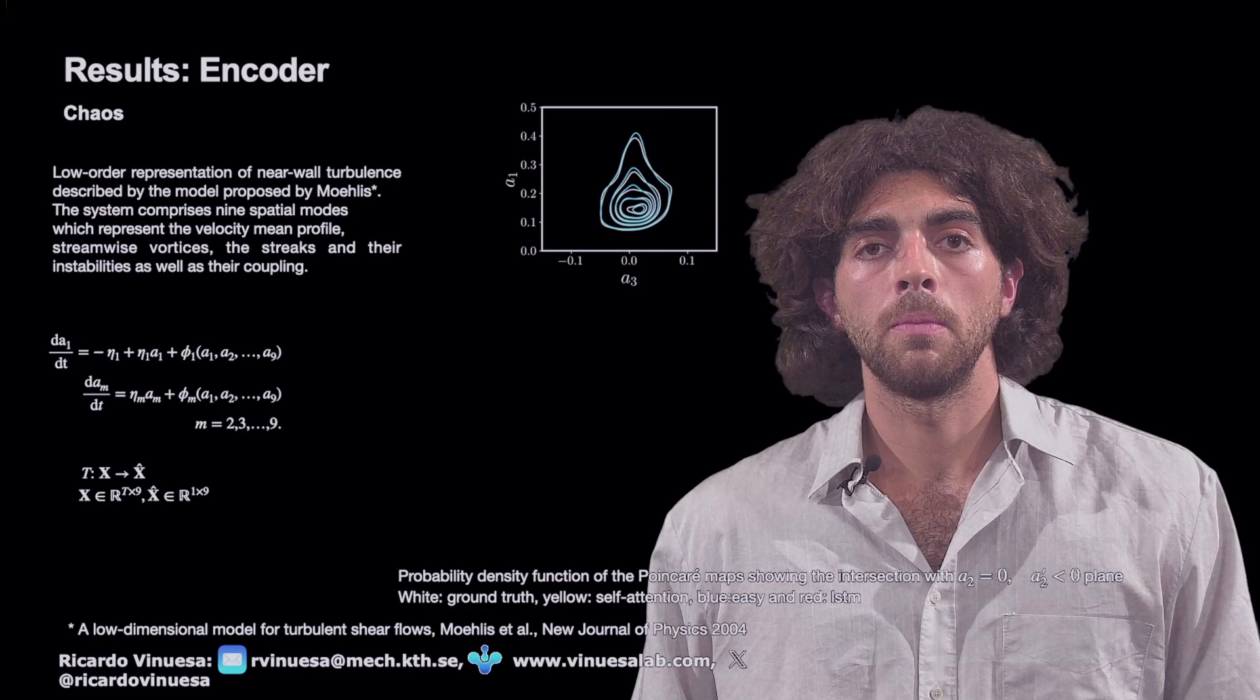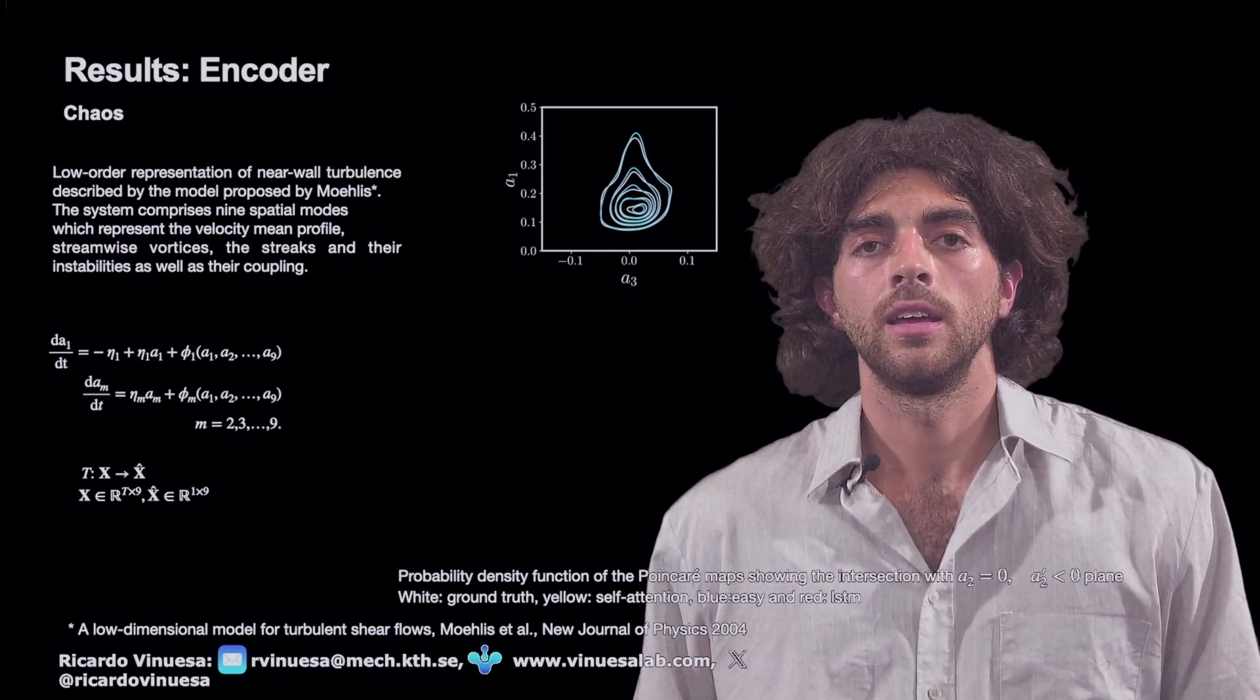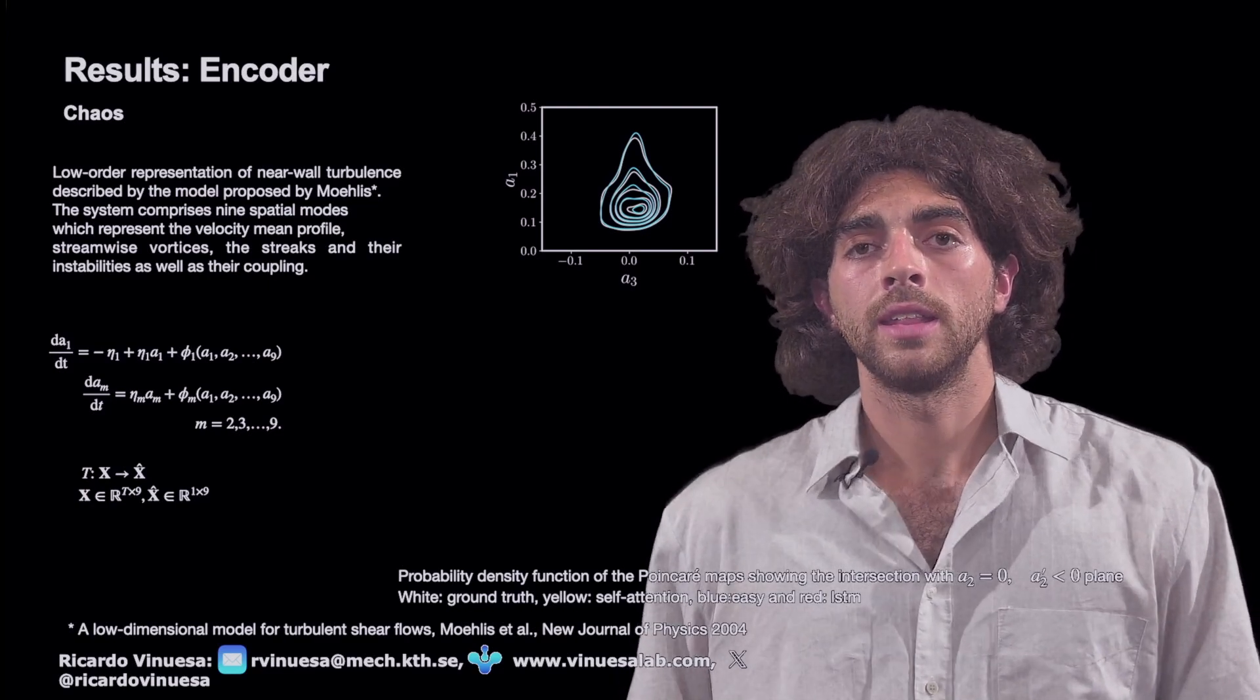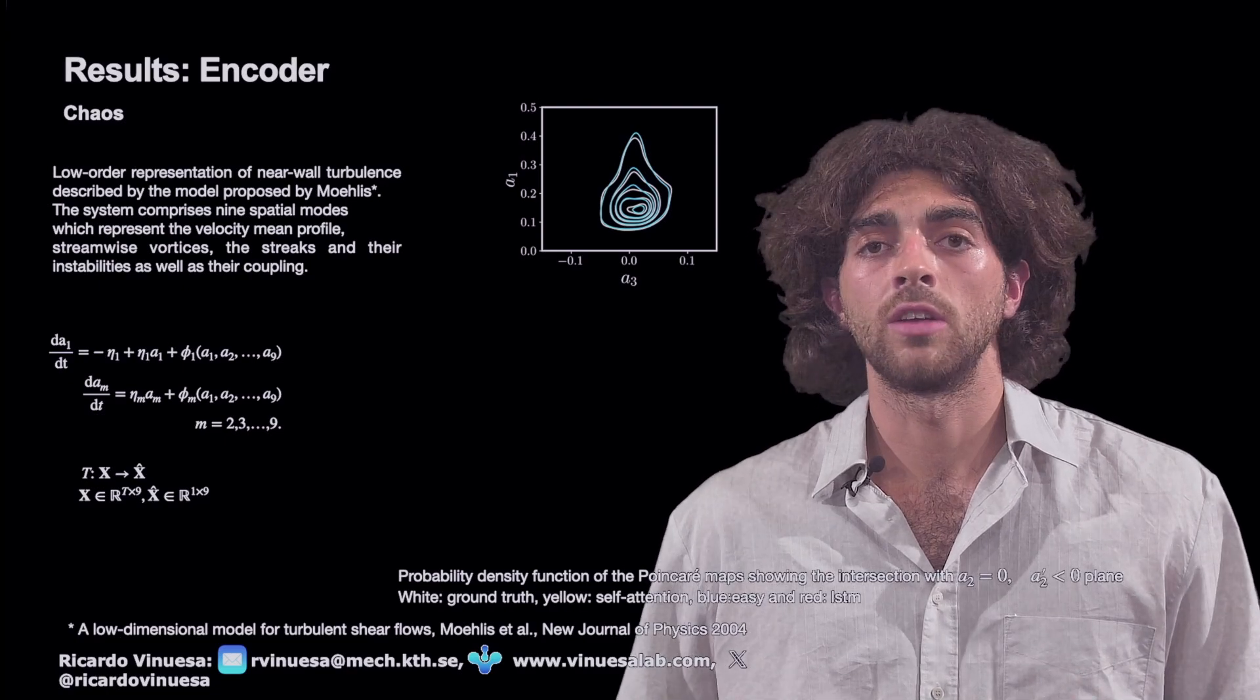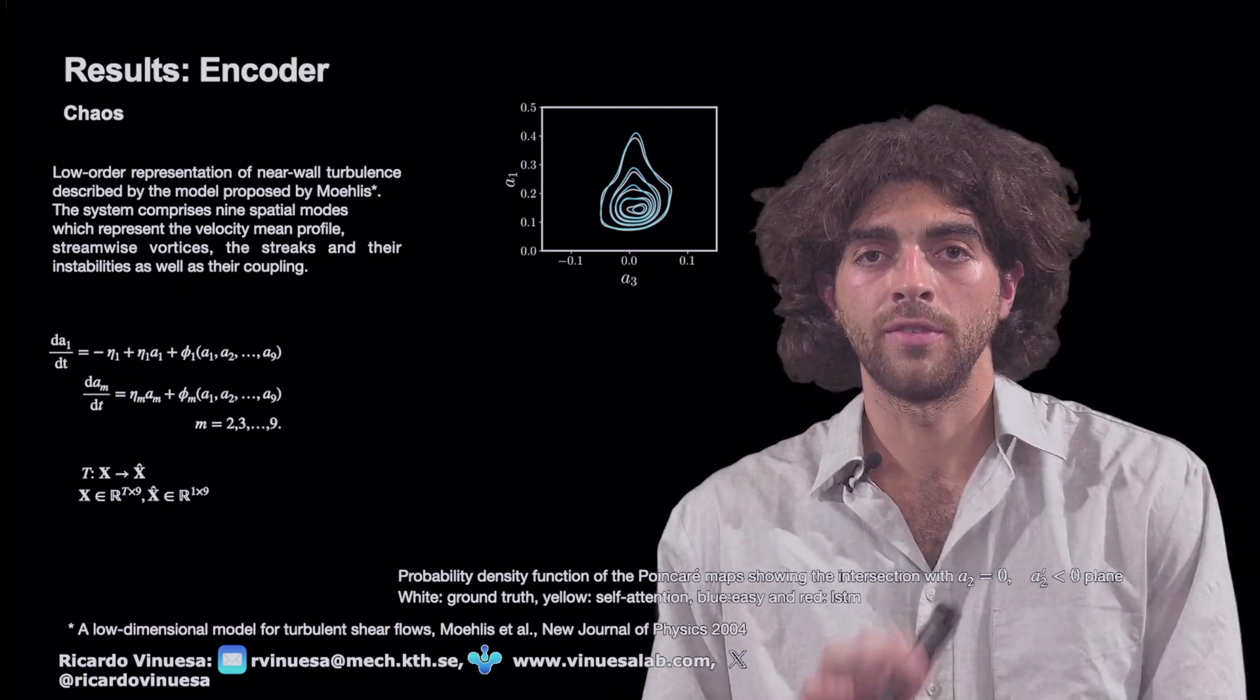In this case, we are studying a nine-equation ODE. It's the Moehlis system. It's a low-order turbulence model that already encapsulates really important information, such as the Reynolds stresses and different structures and the different correlations between them.